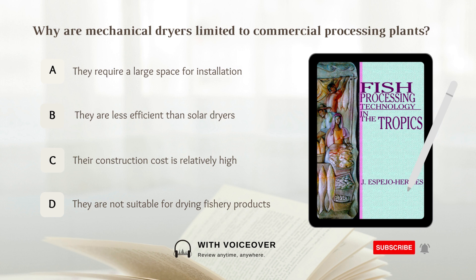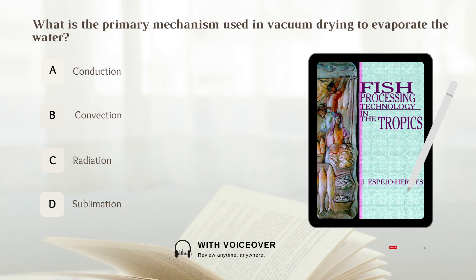Why are mechanical dryers limited to commercial processing plants? A. They require a large space for installation. B. They are less efficient than solar dryers. C. Their construction cost is relatively high. D. They are not suitable for drying fishery products. The answer is C, their construction cost is relatively high. What is the primary mechanism used in vacuum drying to evaporate the water? The answer is A, conduction.